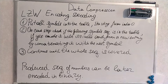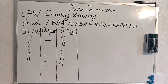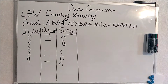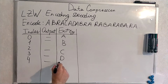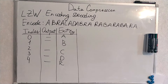The produced sequence of numbers can be later encoded in binary. I will show you an example and it will become clear. We are going to encode 'abracadabra barabara,' and I've made the first step here: I filled our table with all symbols we have in our sequence. I'm sorry, here it shall be R.